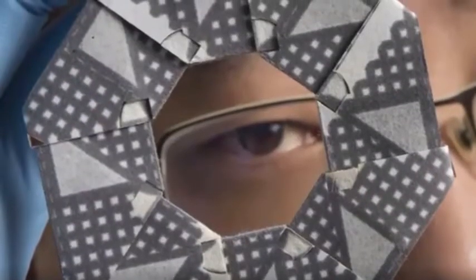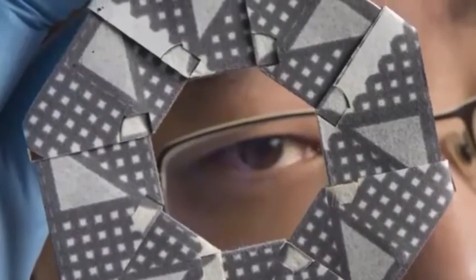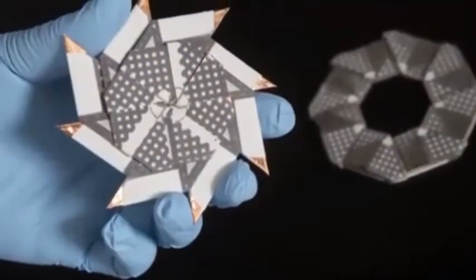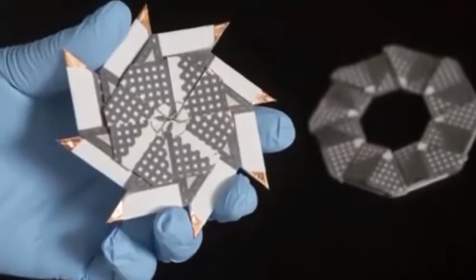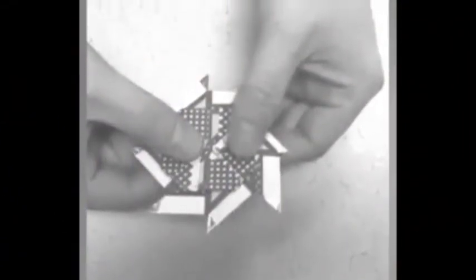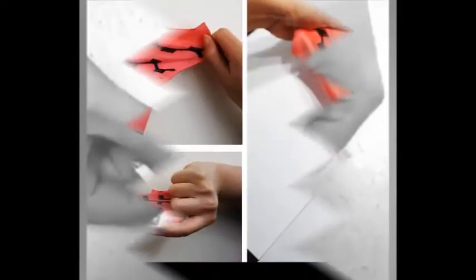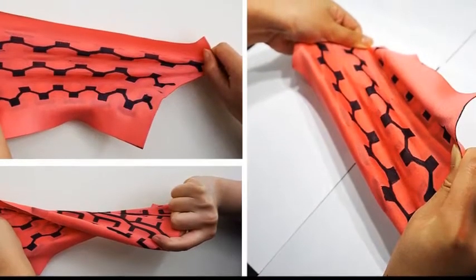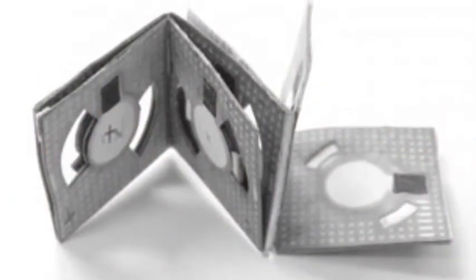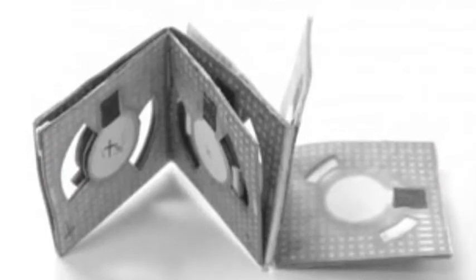The team, led by Binghamton University Electrical and Computer Science Assistant Professor Seokheun Choi, created an entirely textile-based biobattery that can produce maximum power similar to that produced by his previous paper-based microbial fuel cells. Additionally, these textile-based biobatteries exhibit stable electricity-generating capability when tested under repeated stretching and twisting cycles.